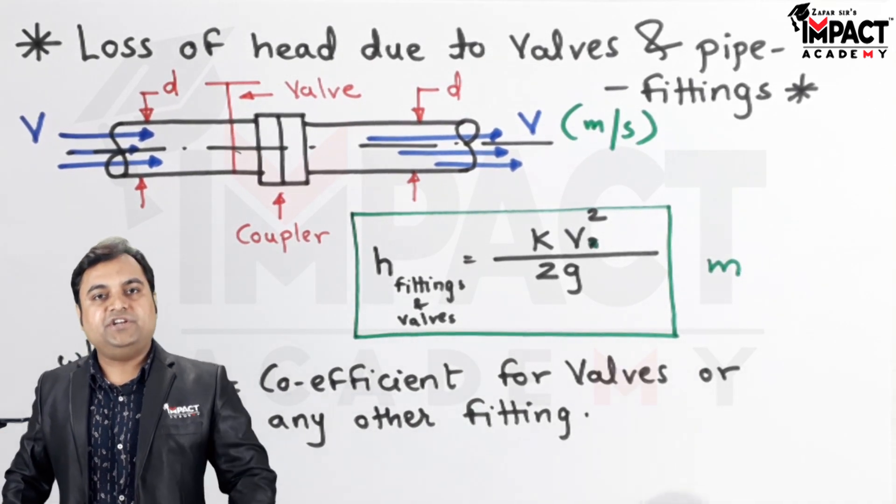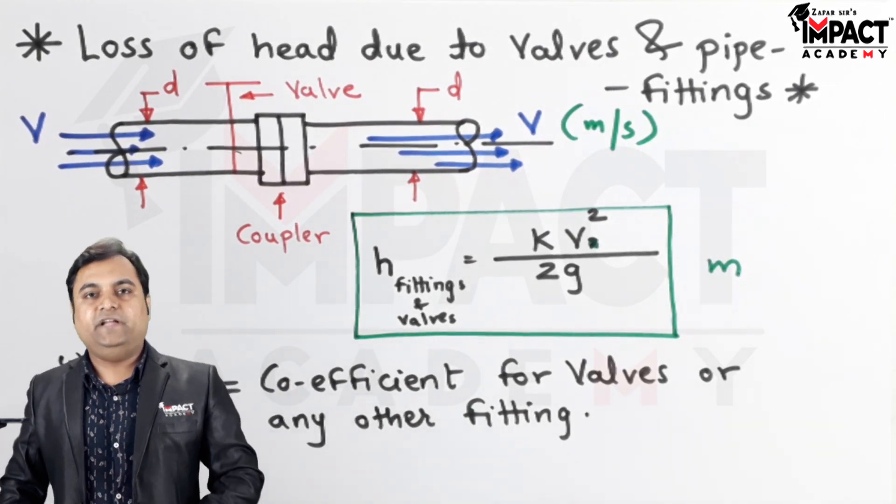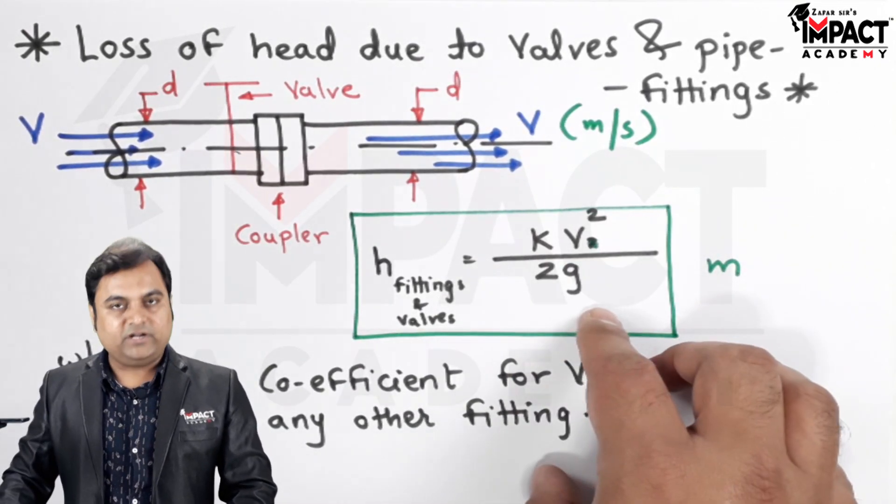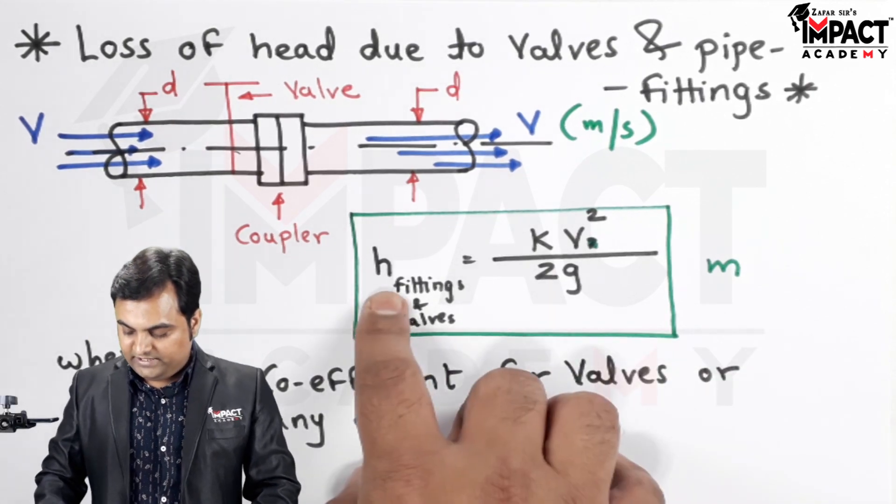Of k would go on changing depending upon the type of fitting and the type of material we are using. So by using this formula, which is k v² / 2g, we can calculate the head loss due to...